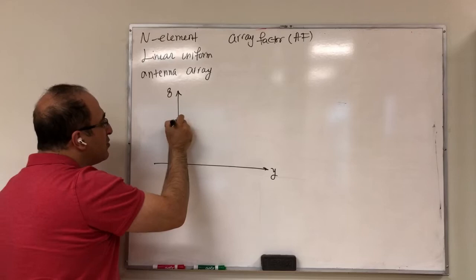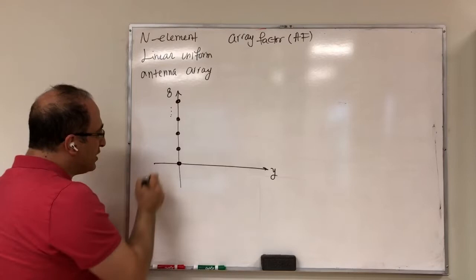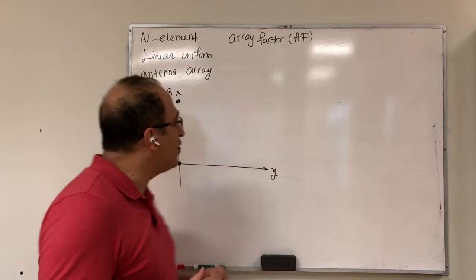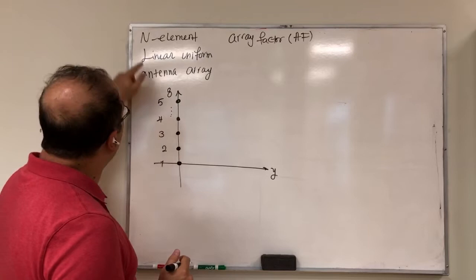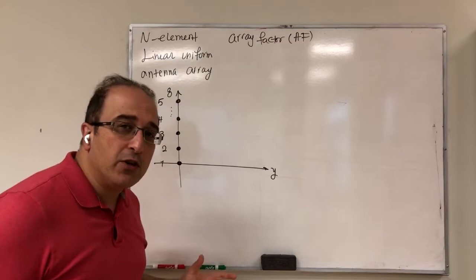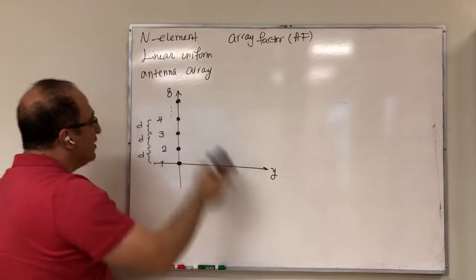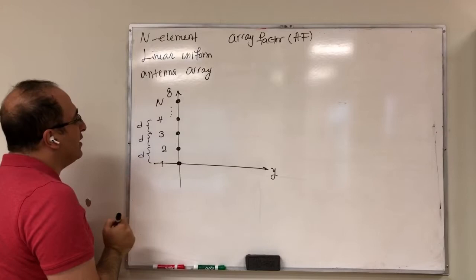So these are my antenna elements. This is element 1, element 2, element 3, element 4, element 5, and so on up to element N. The array is called linear because the elements are on a line, and uniform because the separation between all elements is the same — this separation is d, this is d, this is d, and so on.